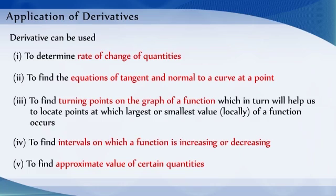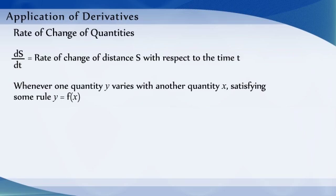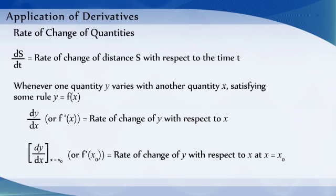We know that the derivative ds/dt means the rate of change of distance s with respect to time t. In a similar way, whenever one quantity y varies with another quantity x, satisfying some rule y = f(x), then dy/dx or f'(x) represents the rate of change of y with respect to x, and dy/dx at x = x₀, or f'(x₀), represents the rate of change of y with respect to x at x = x₀.